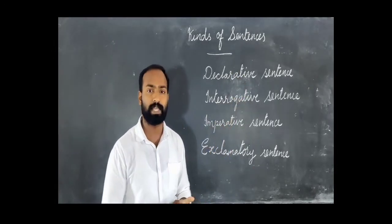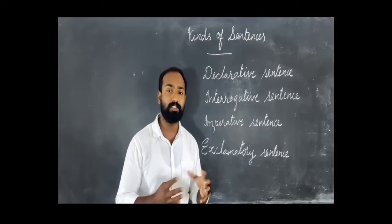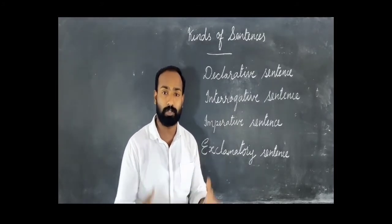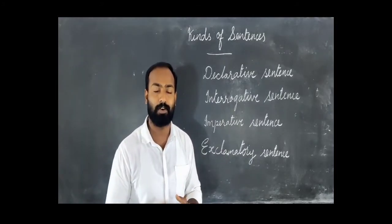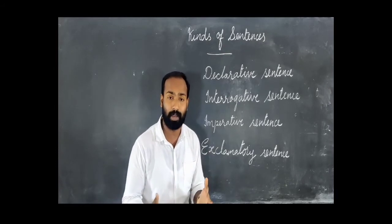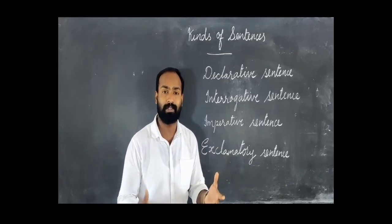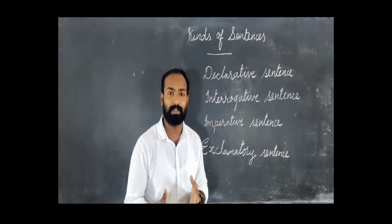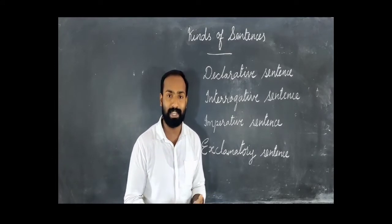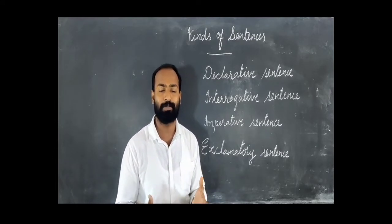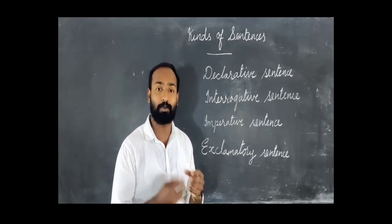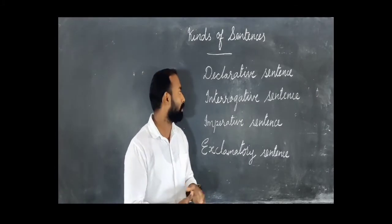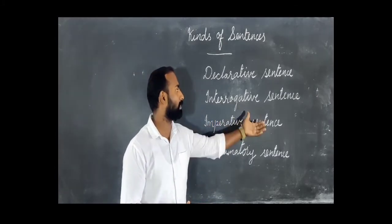The next kind is the interrogative sentence. These are sentences that ask questions. For example, 'How do you do?' 'How are you doing?' 'Where is your car?' 'What is your business?' 'Where are you going now?' All these are questions and they belong to the group of interrogative sentences.